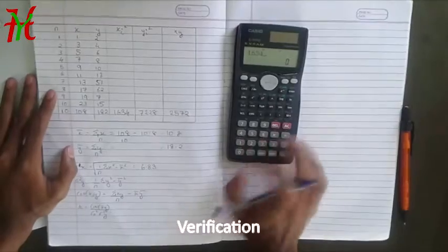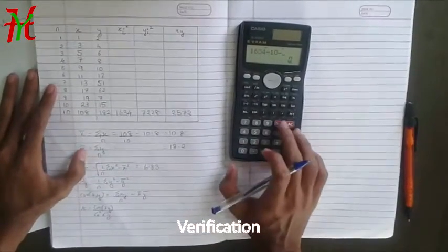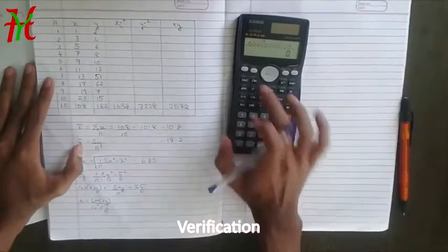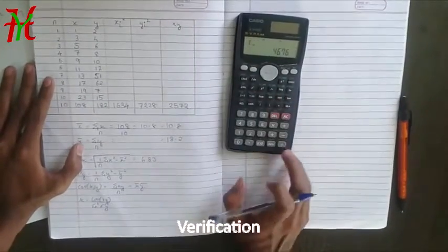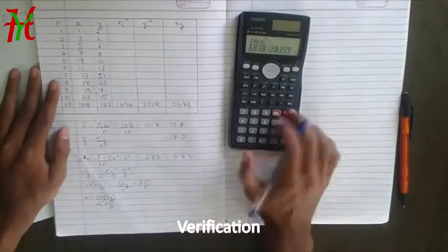The mean is 10.8, the whole square. We get this, take down the root, it comes to be the same, 6.83, hence it's verified.